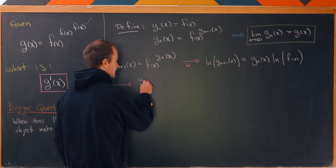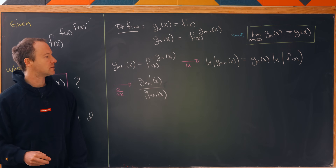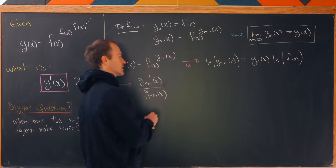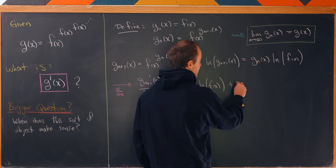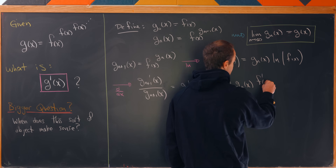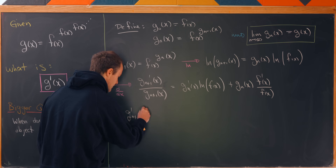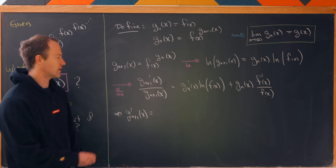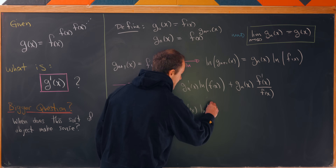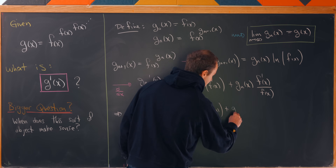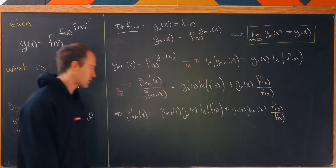Differentiating both sides gives g_{n+1}'(x) over g_{n+1}(x) by the chain rule. On the right-hand side we use both the chain rule and the product rule, giving us g_n'(x) times the natural log of f(x), plus g_n(x) times f'(x) over f(x). Distributing g_{n+1} gives us: g_{n+1}(x) times g_n'(x) times the natural log of f(x), plus g_n(x) times g_{n+1}(x) times f'(x) over f(x).